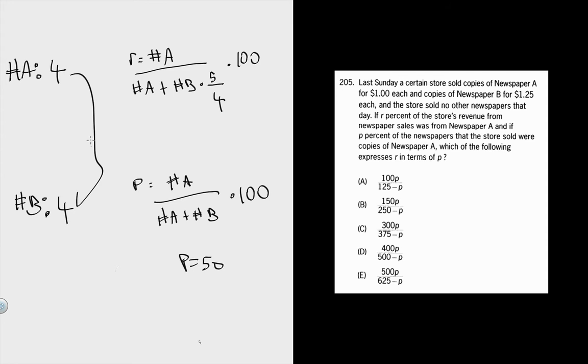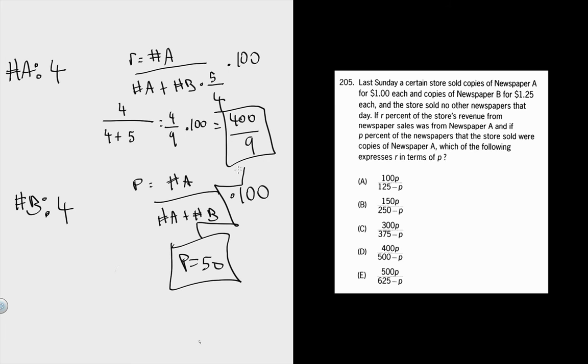Now we just plug these guys in here. So 400/9 obviously doesn't match any of the answer choices. What we need to do is plug in P and then spit out 400/9.